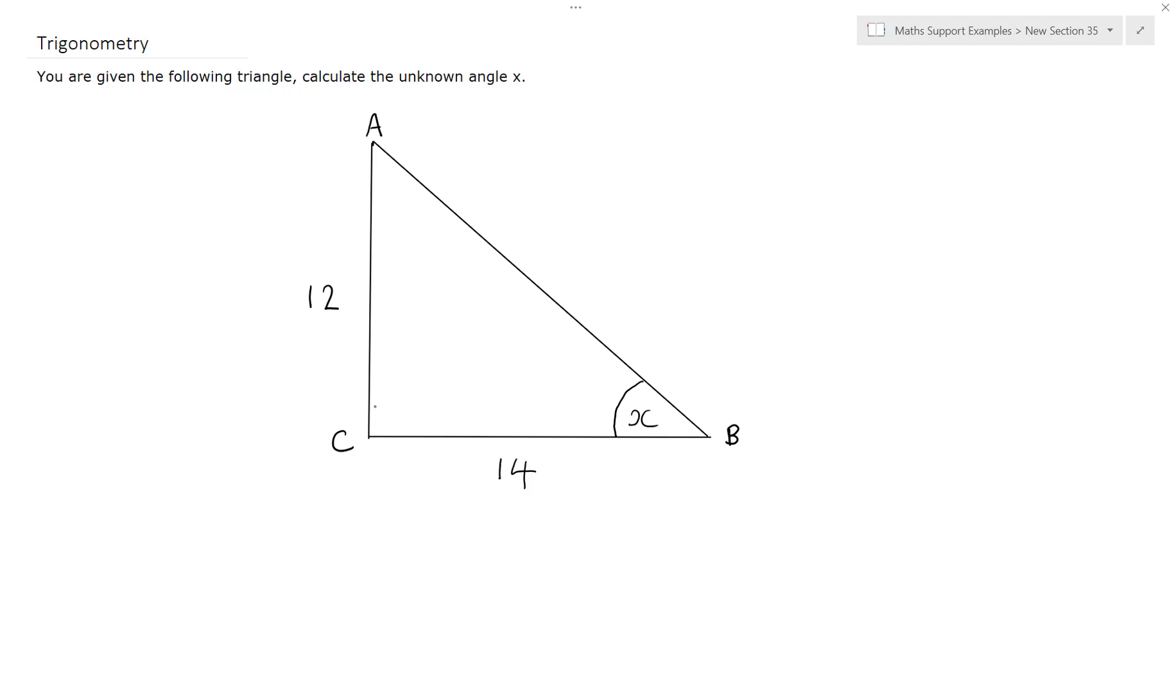You should recall that the length opposite the right angle is the hypotenuse, the one opposite the angle that we know or the unknown angle we're trying to find is the opposite, and the one next to that is the adjacent.